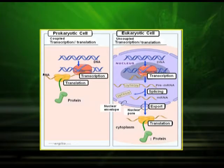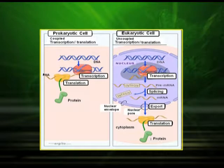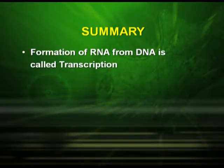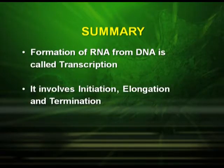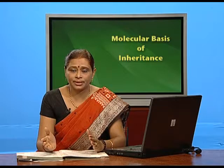This can be understood from the following diagram: in the prokaryotic cell, transcription and translation are coupled, whereas in the eukaryotic cell, transcription and translation are uncoupled — meaning they take place at different places and at different times. To summarize: the formation of RNA from DNA is called transcription, which involves initiation, elongation, and termination. In eukaryotes, three modifications — capping, tailing, and splicing — are required to form functional mRNA. Thank you.